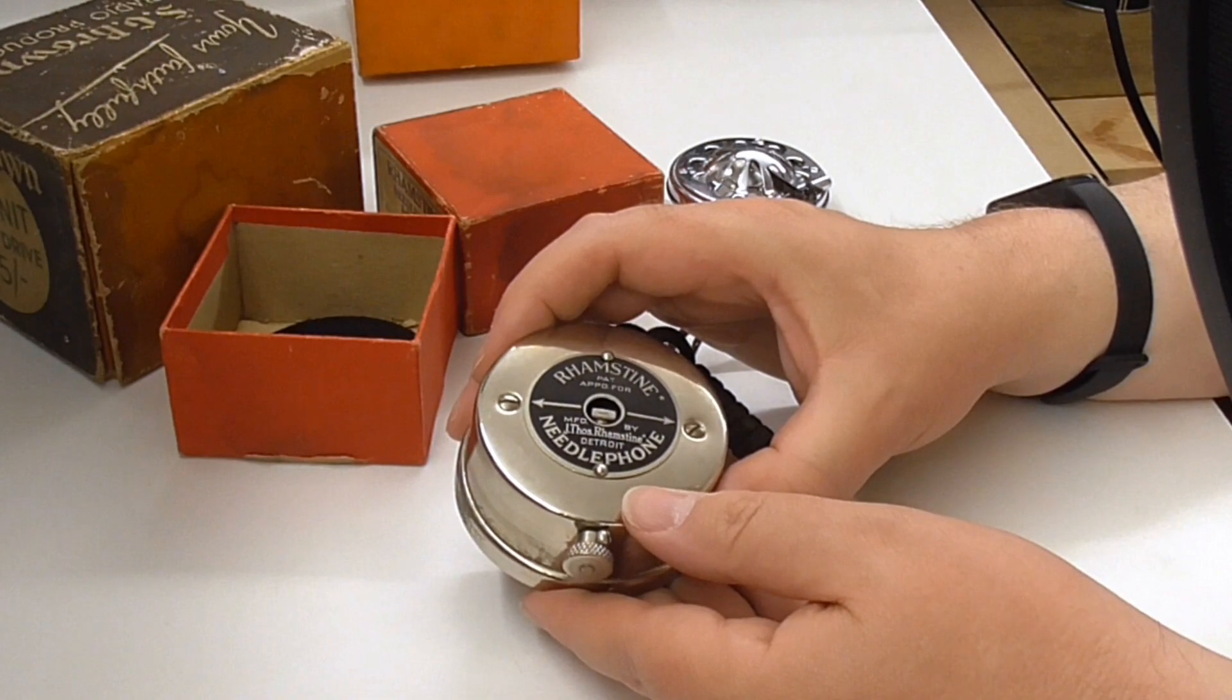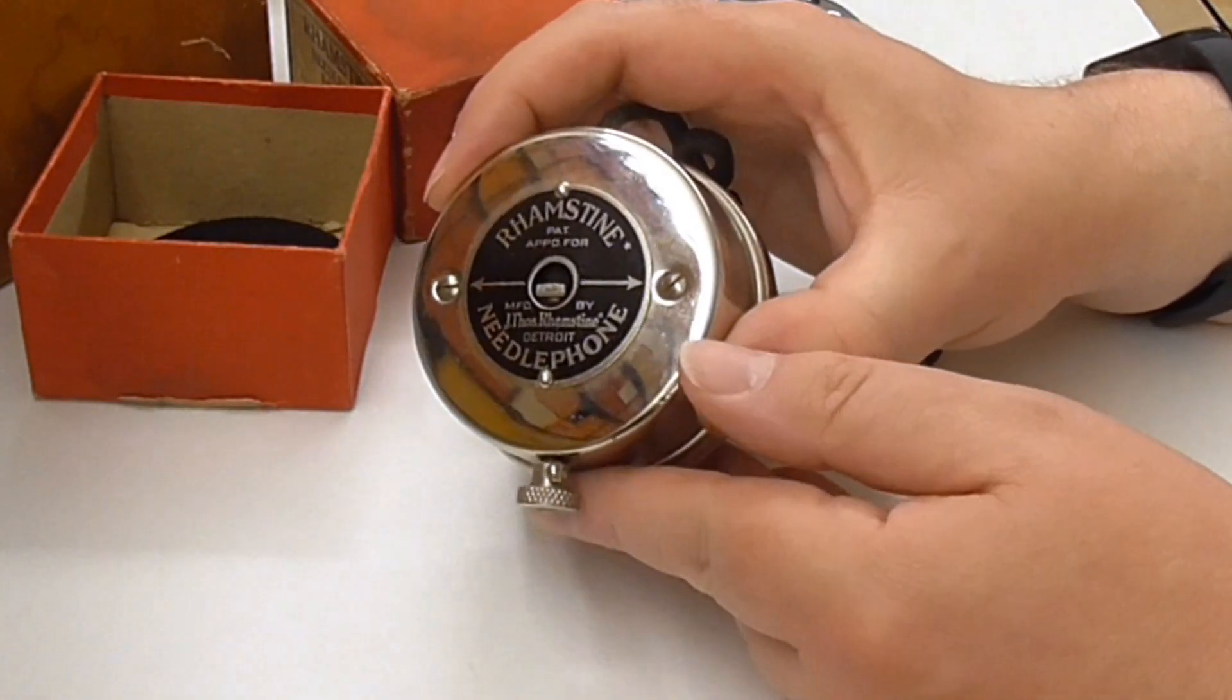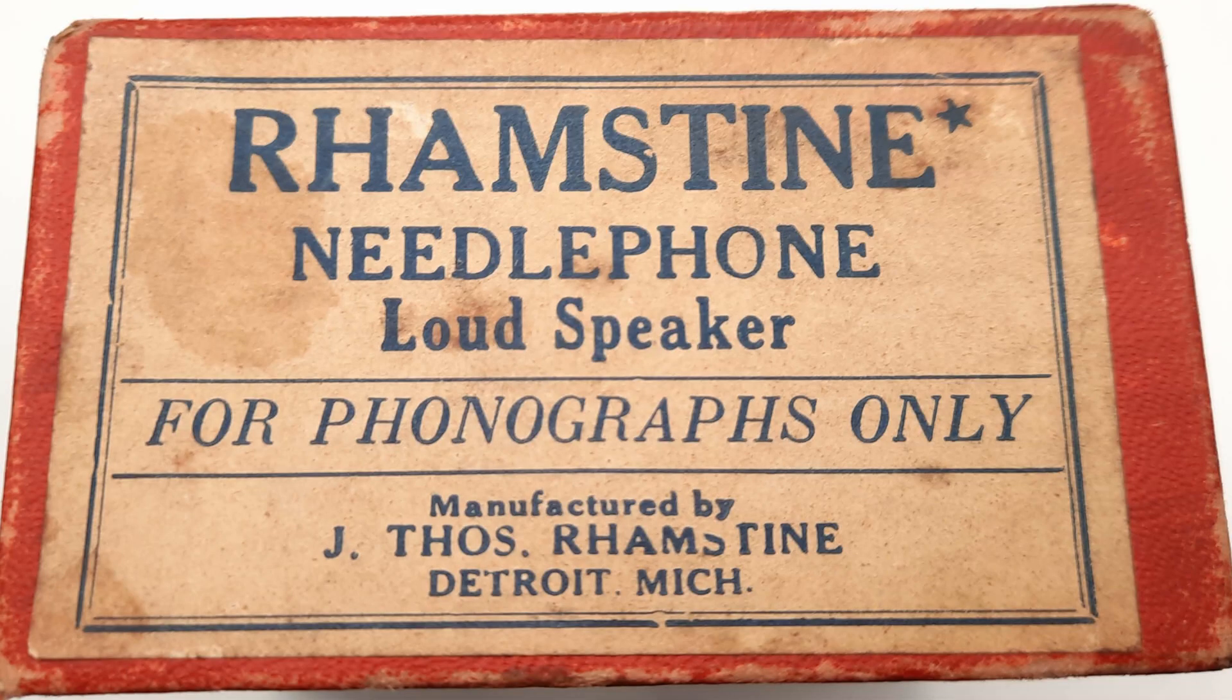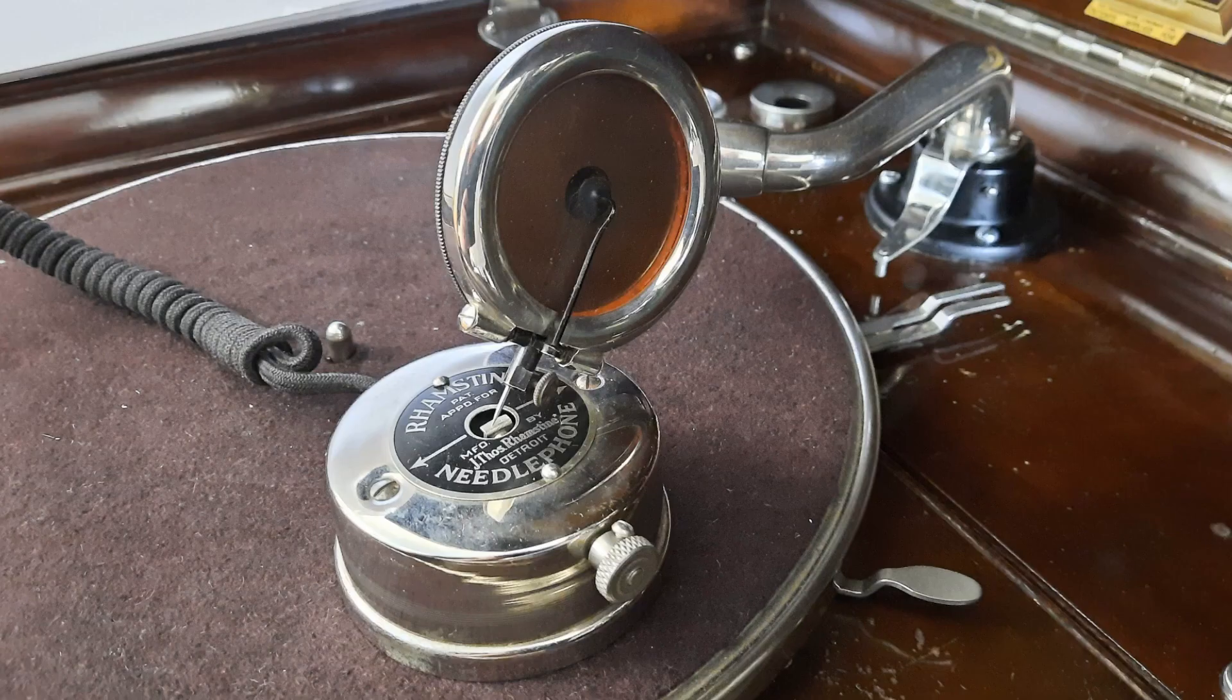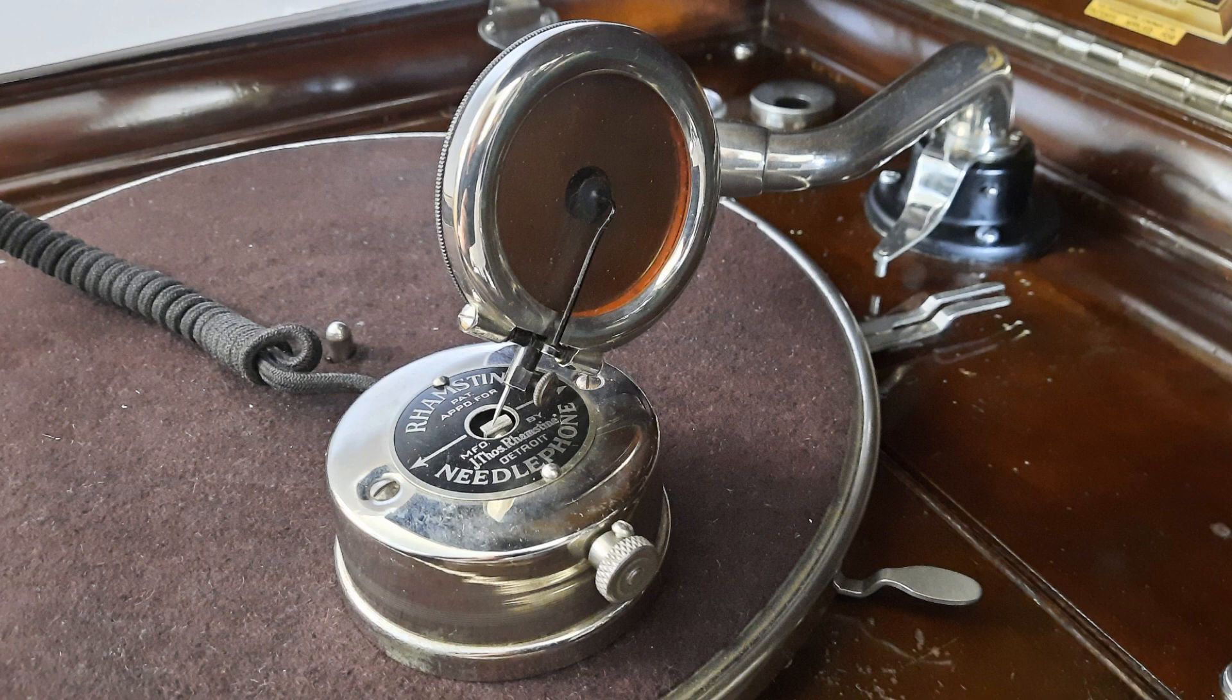Now this is a loudspeaker even if it doesn't look much like one. It's actually a neat little vintage device which allows you to play your radio through a gramophone or phonograph. Today you could use it to hook up an mp3 player and play whatever you wanted.